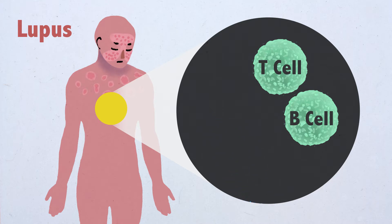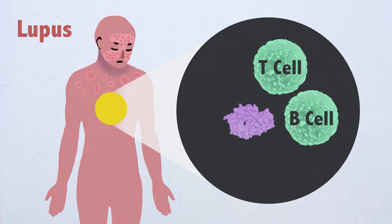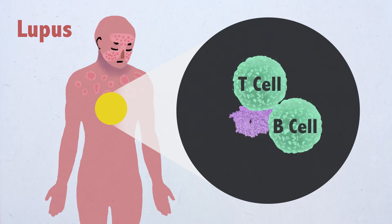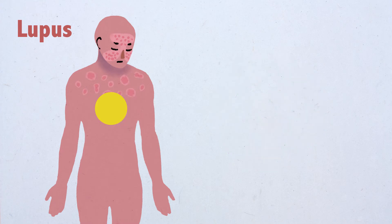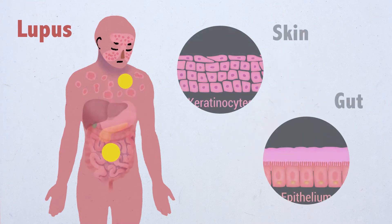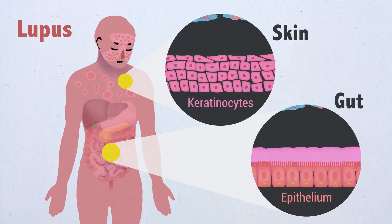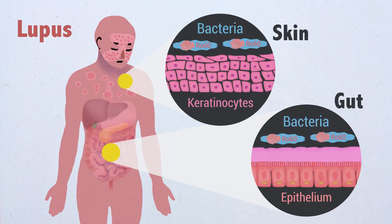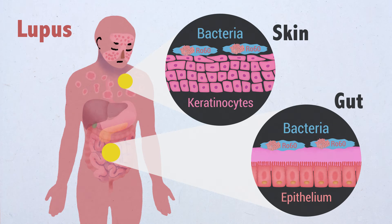In this paper, we show that the earliest self-molecule attacked by immune cells of most lupus patients — the RNA binding protein Ro60 — may be targeted because it is very similar in structure to evolutionary conserved Ro60 proteins expressed in certain skin and gut bacteria.